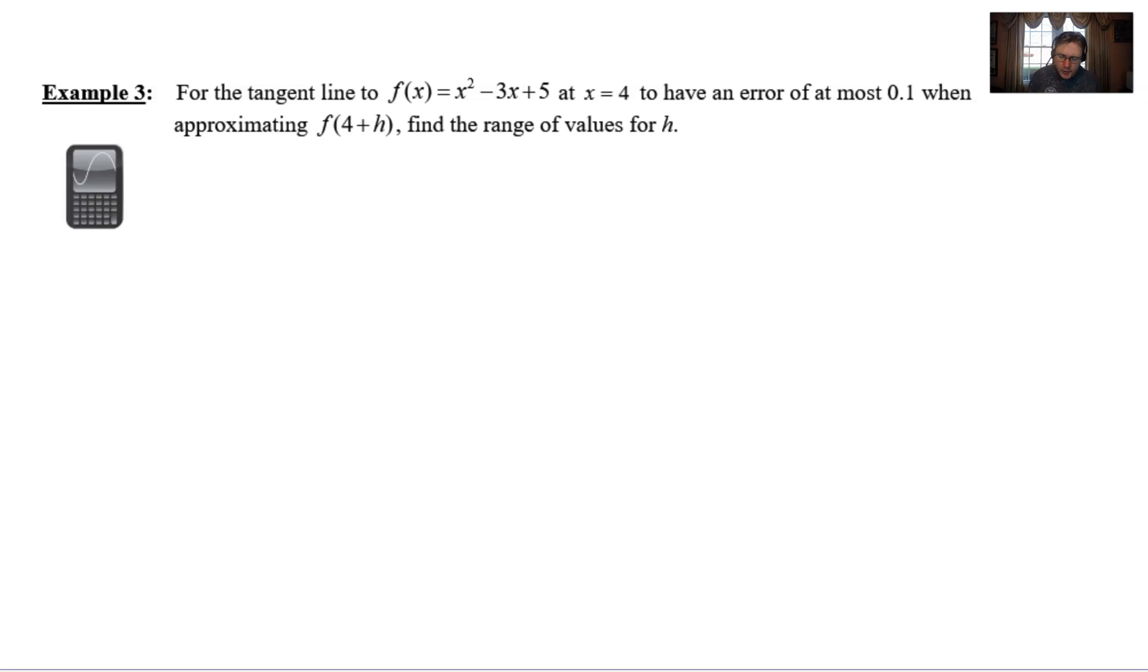As we can see, the question reads: for the tangent line to the graph of f(x) = x² - 3x + 5, at x = 4 to have an error of at most 0.1 when approximating f(4 + h), find the range of values for h.